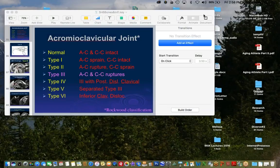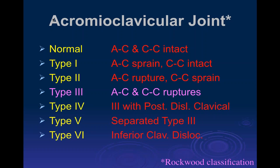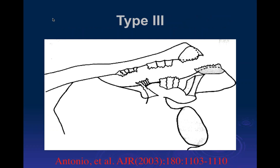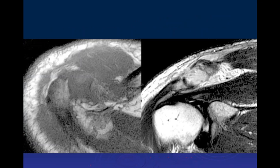We'll continue our discussion of AC injuries. Type 3 is where you have a tear of the AC joint ligaments and capsule as well as the CC ligaments, which you can see here.